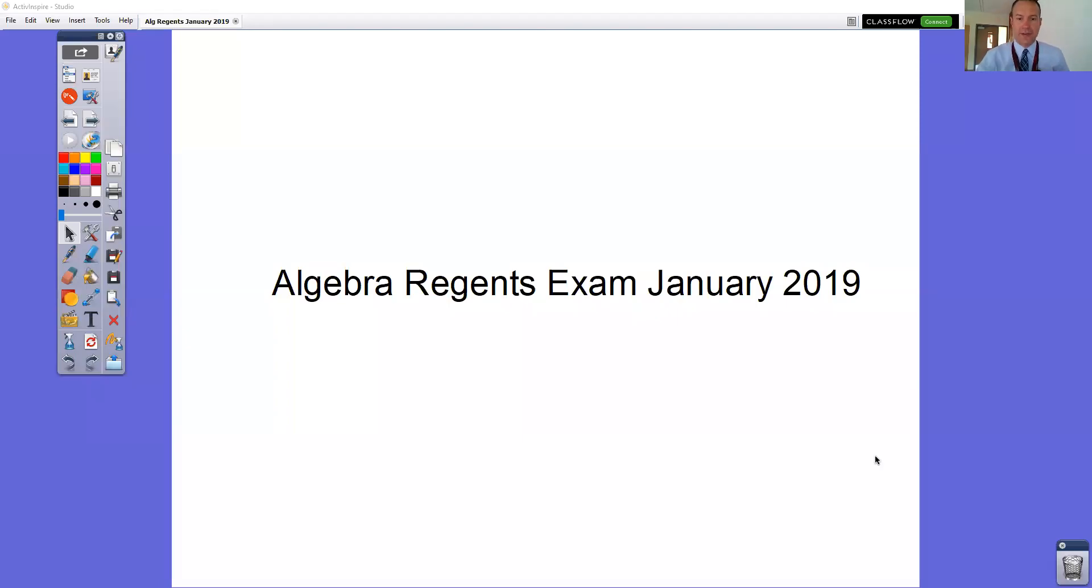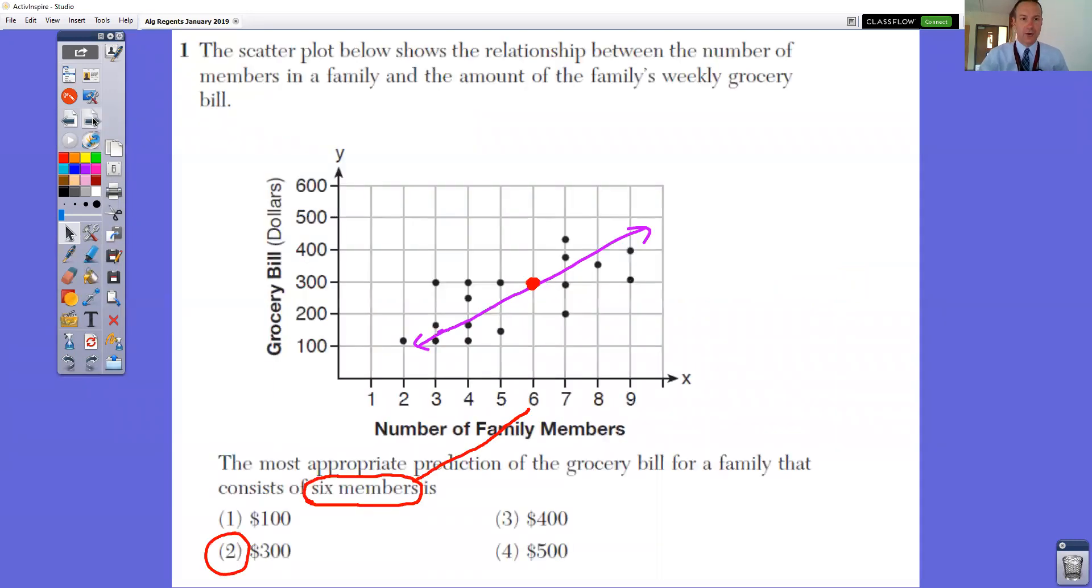These are the answers for the Algebra Regents exam for January 2019 for the multiple choice. In question number one, the scatter plot shown below shows the relationship between the number of members in a family and the amount of the family's weekly grocery bills.